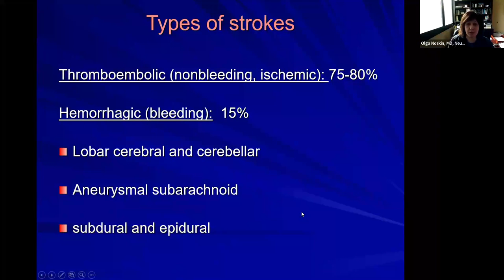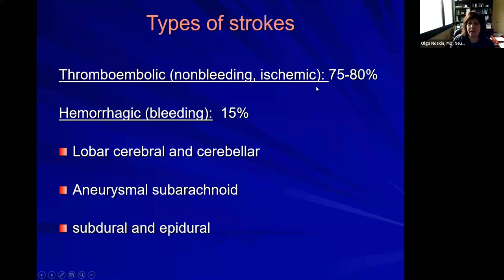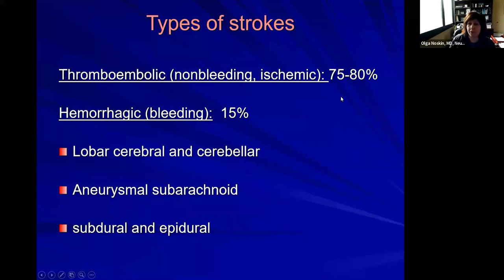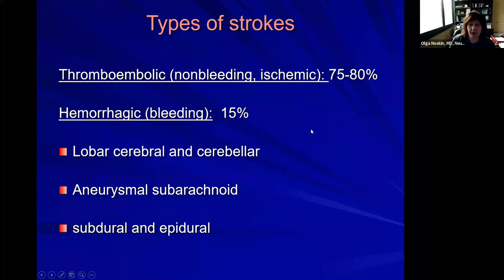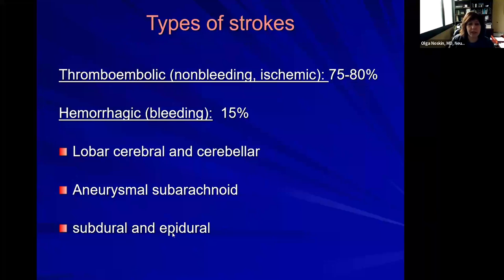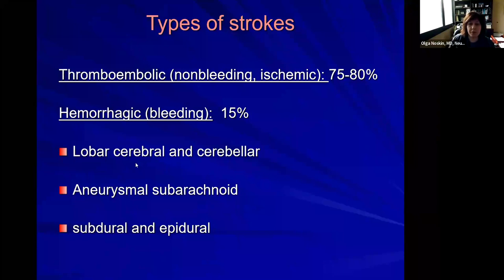There are a couple of types of strokes: bleeding strokes and non-bleeding strokes. The non-bleeding strokes, also called ischemic or thromboembolic, happen due to lack of oxygen going to a part of the brain — these comprise the majority of strokes we see. Then there are bleeding or hemorrhagic strokes, which comprise about 15%, and they are further subdivided into strokes from trauma such as subdural or epidural bleeding, aneurysm rupture known as subarachnoid strokes, or cerebral strokes within the brain itself.